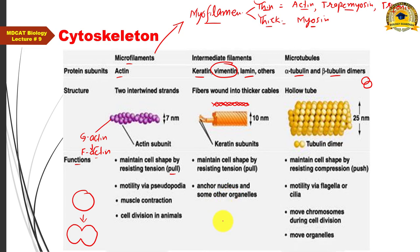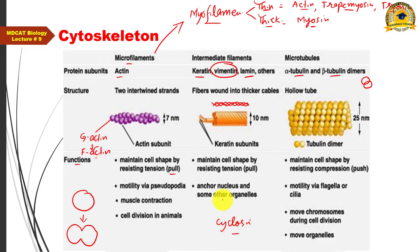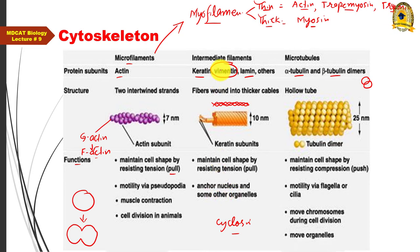The movement of cytoplasm is called cyclosis. Some organelles remain fixed in position within the cytoplasm — this is because of intermediate filaments.